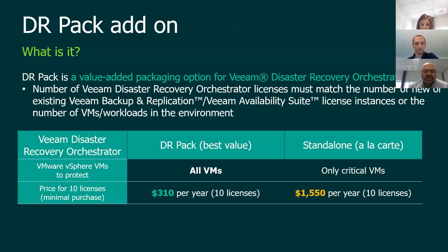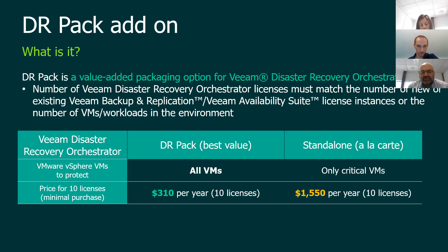For the Disaster Recovery Orchestrator, there are two ways to buy it. You can buy it standalone — packs of 10 orchestrated VMs, around 1,550 US dollars per pack per year. Or with a DR pack, which is cheaper but requires licensing all your VMs — even those you don't want to orchestrate. With the standalone you only buy licenses for the VMs you want to orchestrate. With the DR pack, it's only 310 USD per year for 10 licenses, but you need to license all your VMs — it's cheaper overall.